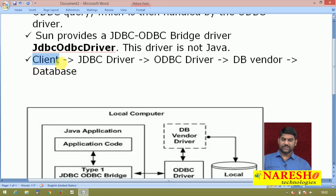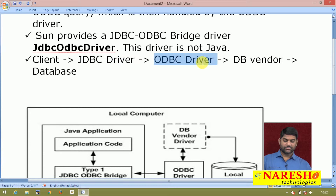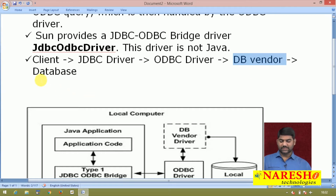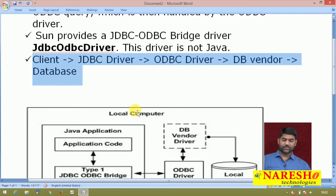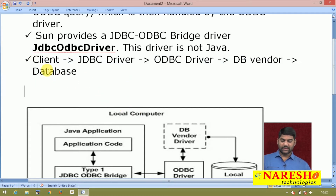The client call - the application passing the call to the JDBC-ODBC bridge driver - is then passed to the ODBC driver. ODBC passes the call again to DB vendors, and DB vendors pass the call finally to the database. This is the example of the entire operation for the type 1 driver.